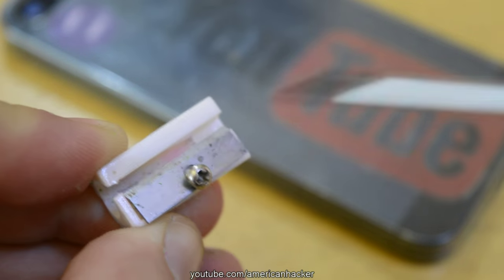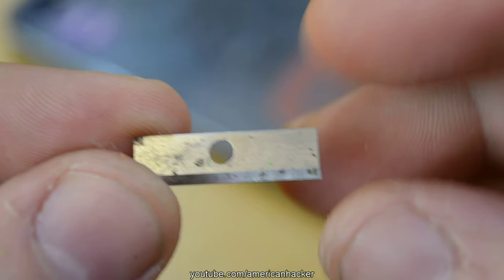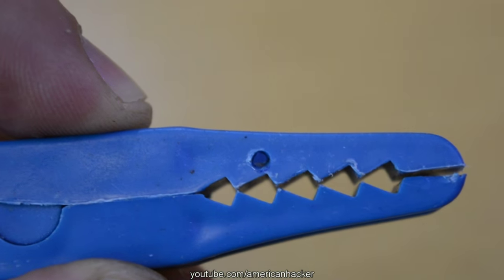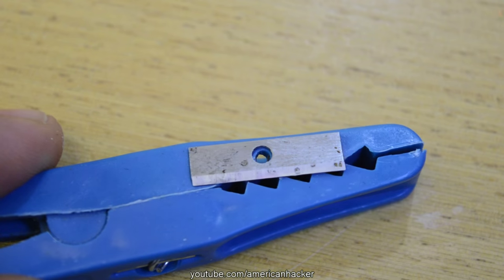With a screwdriver, pull out the blade from the sharpener and make a small hole in the clothespin. Place the blade just like I show you now and put back the screw.